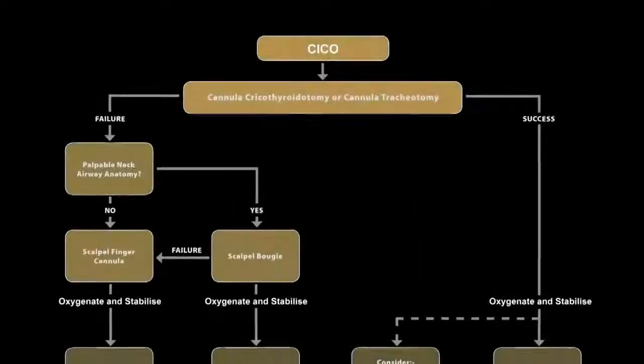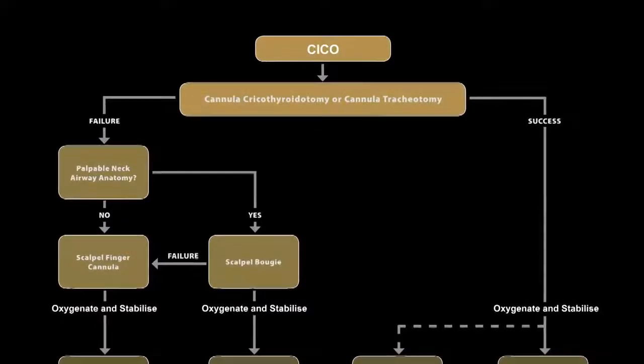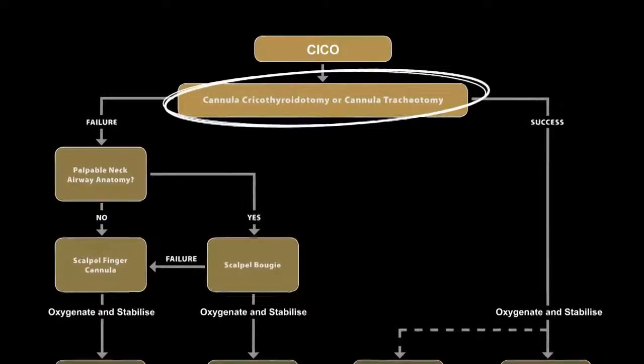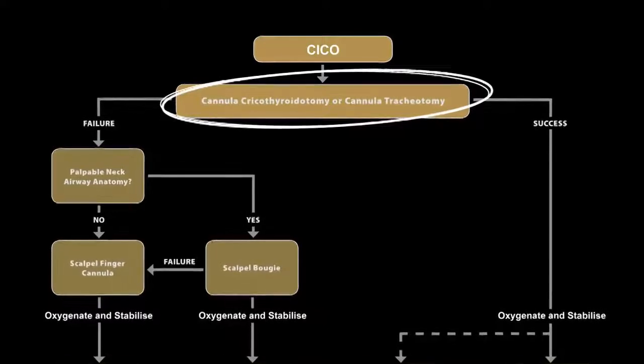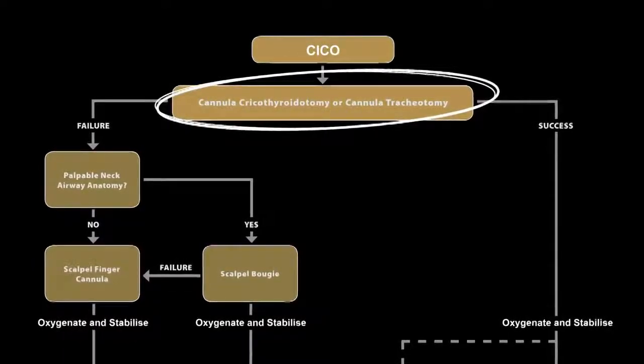In a can't-intubate, can't-oxygenate scenario, the anesthetist should immediately undertake a cannular cricothyroidotomy or cannular tracheotomy to achieve safe, simple and fast oxygenation of the patient.